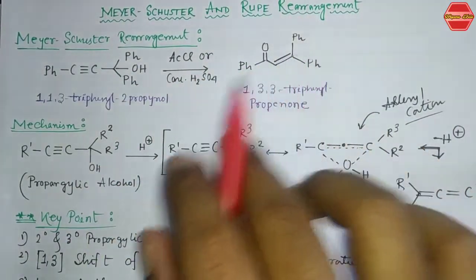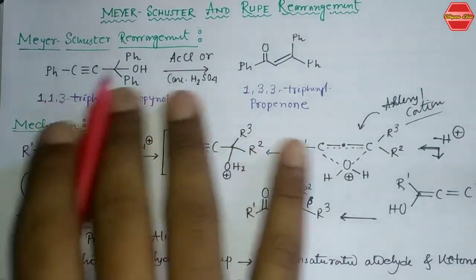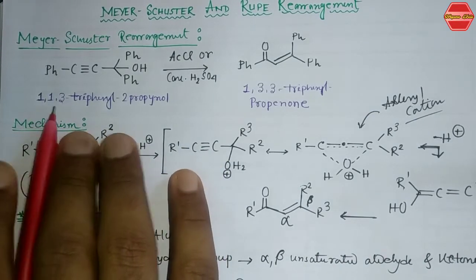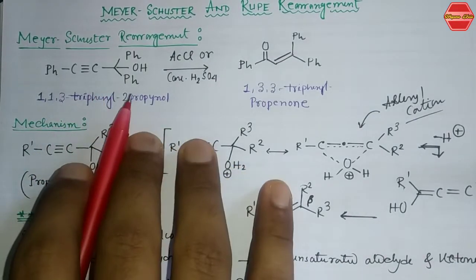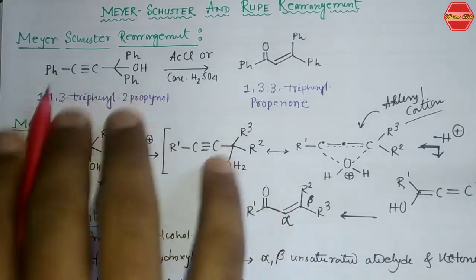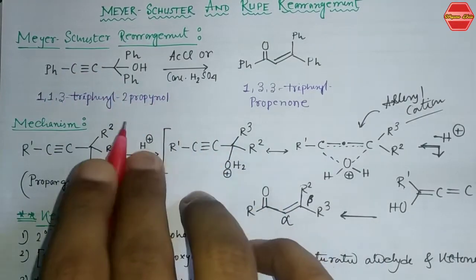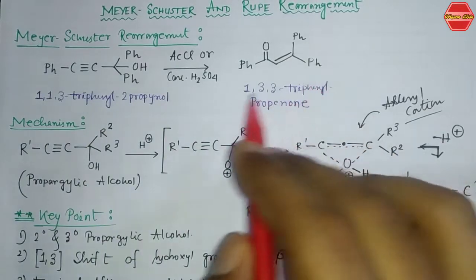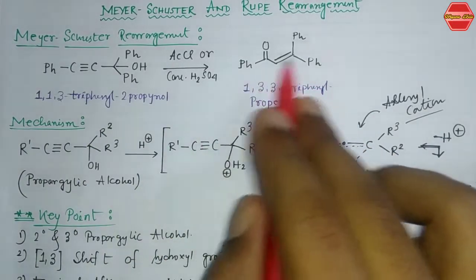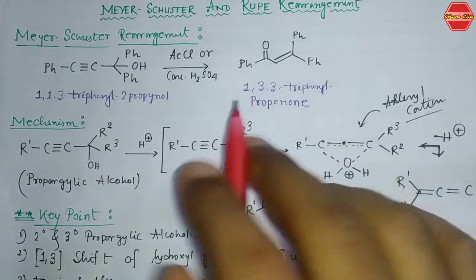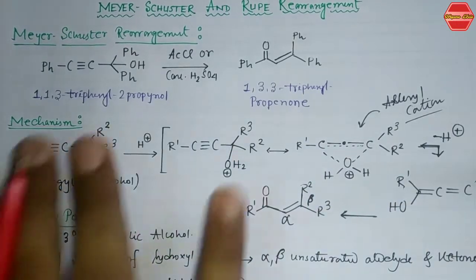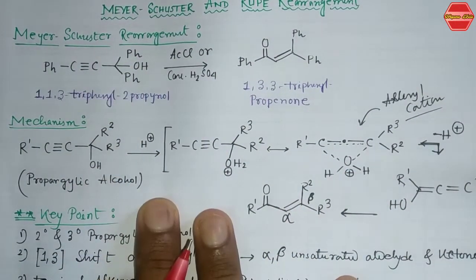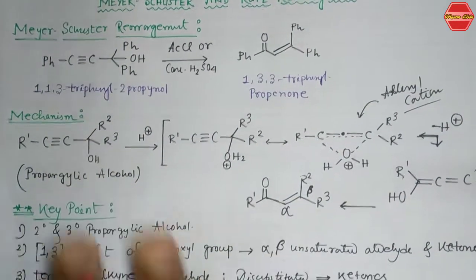If you see carefully, this substrate is 1,1,3-triphenyl-2-propyn-1-ol — it is called propanol because of that. This kind of substrate generally readily forms 1,3,3-triphenylpropanol. In the Meyer-Schuster rearrangement, see the mechanism first.